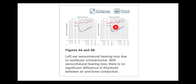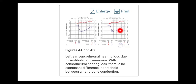The right is red and the circle is used for the right side; the left is blue. In this case, on the left ear there is sensorineural hearing loss due to vestibular schwannoma. With sensorineural loss there is no significant difference in threshold between air and bone conduction. There should be a minimum air-bone gap of 10 decibels to indicate a conductive component. Note here that there is no such gap.